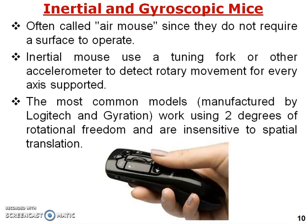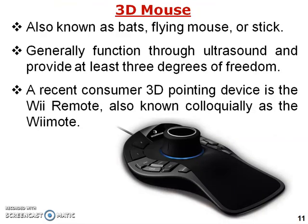Inertial and gyroscopic mouse: often called an air mouse, it does not require any surface to operate — you do not need to move it on a flat surface. It uses a tuning fork or other accelerometer to detect rotary movement for every axis supported. The most common model, manufactured by Logitech and Gyration, uses two degrees of rotational freedom and is insensitive to spatial translation, meaning X and Y coordinate movement.